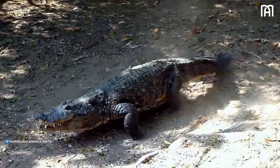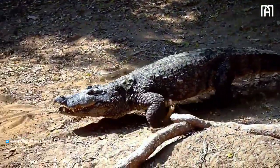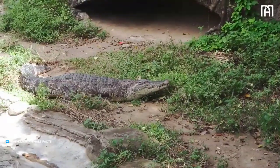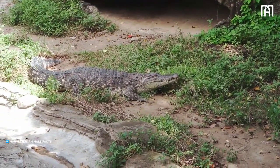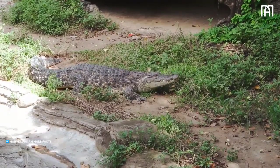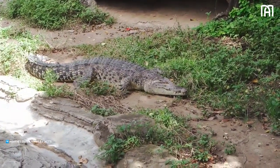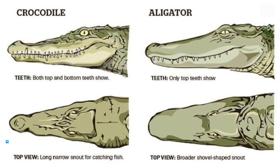The first crocodilians appeared about 245 million years ago. They were small, lizard-like creatures that lived in freshwater habitats. About 80 million years ago, crocodilians diverged into two main groups: alligators and crocodiles.